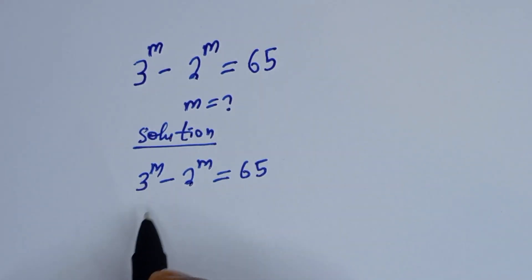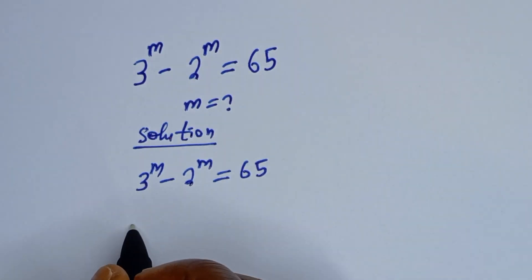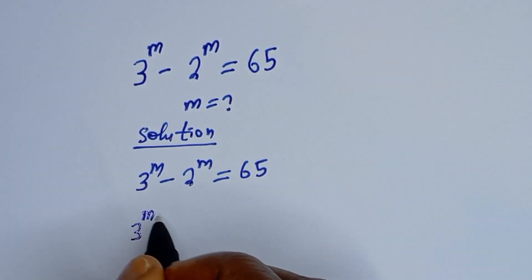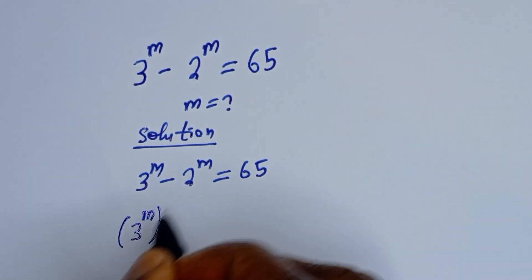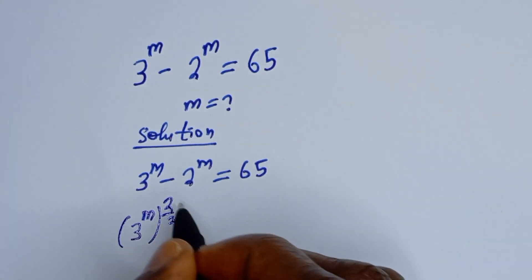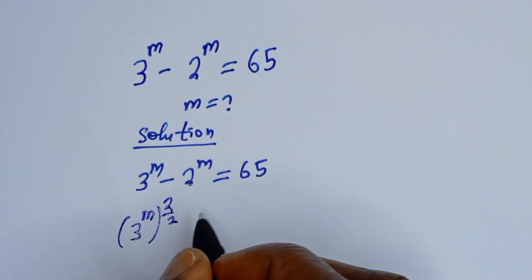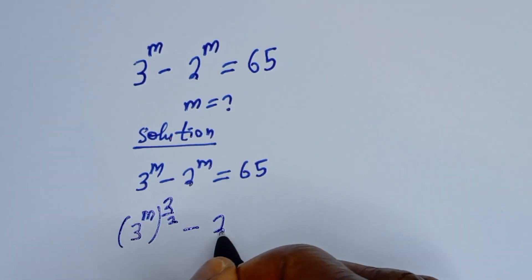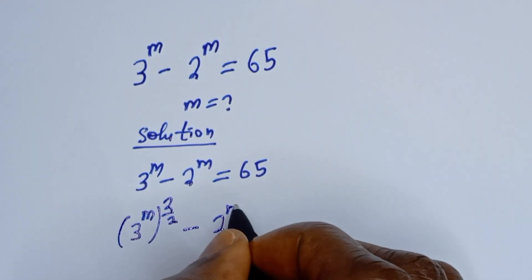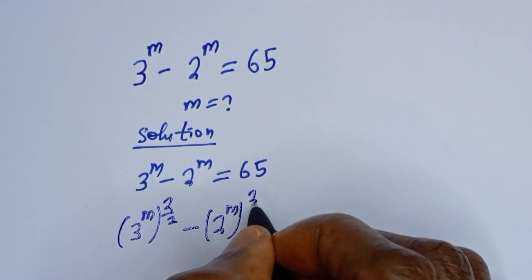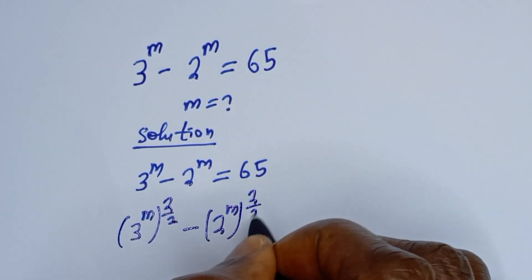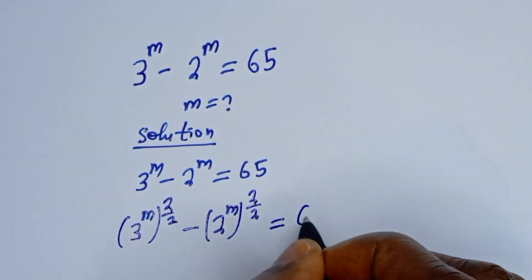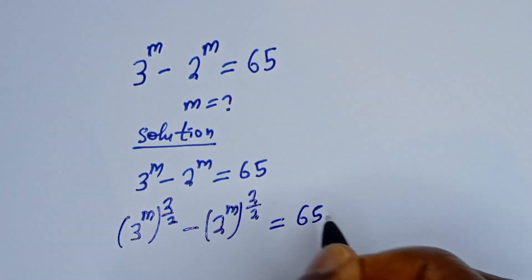This equation can be written as 3 to the power of m to the power of 2 over 2, because 2 divided by 2 is 1, minus 2 to the power of m to the power of 2 over 2, is equal to 65.